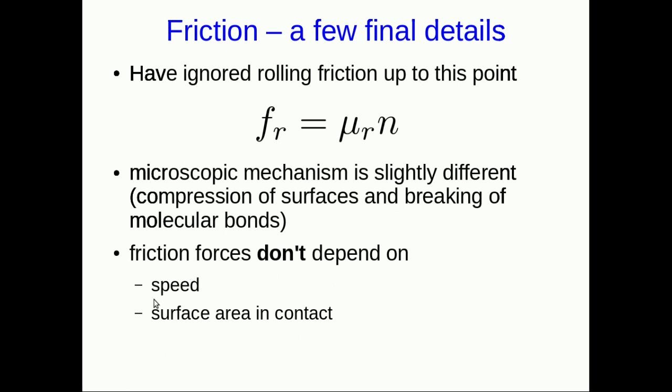Friction doesn't depend on the speed that the surfaces are moving across each other, and it also doesn't depend on the surface area in contact, except that all of this, the equations, this idea of being independent of speed and surface area, this is all just a rough model. And in fact, we don't even really know when this model works and when it fails to work. So this is an area of active research. This is really one of the frontiers of physics. Thanks.